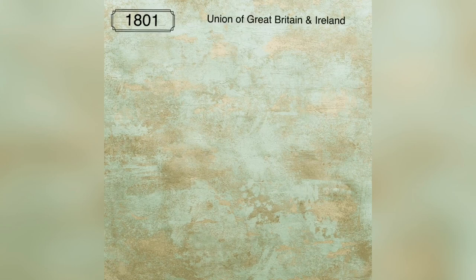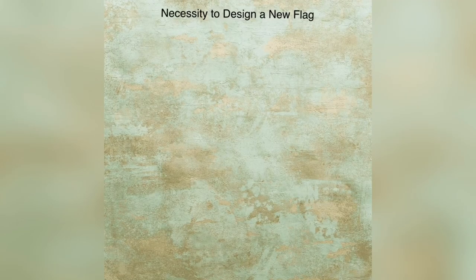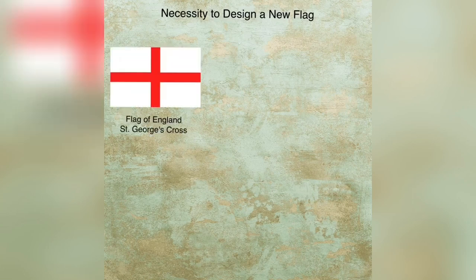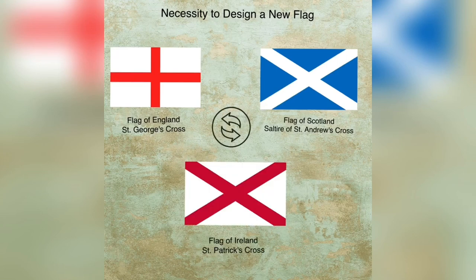Then it was in the year 1801 when the Union of Great Britain and Ireland took place with the passage of the Acts of Union 1800, and George III became the ruler of the United Kingdom of Great Britain and Ireland. So again the necessity was felt to design a new national flag, this time merging the St. George's Cross and the Saltire of St. Andrew's Cross with the St. Patrick's Cross.